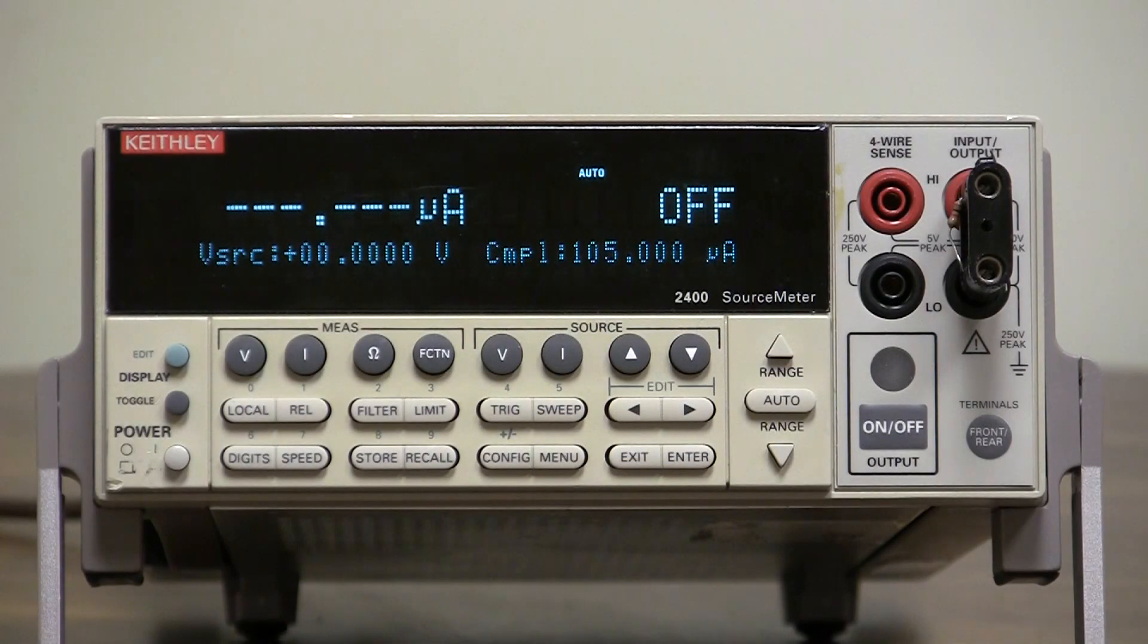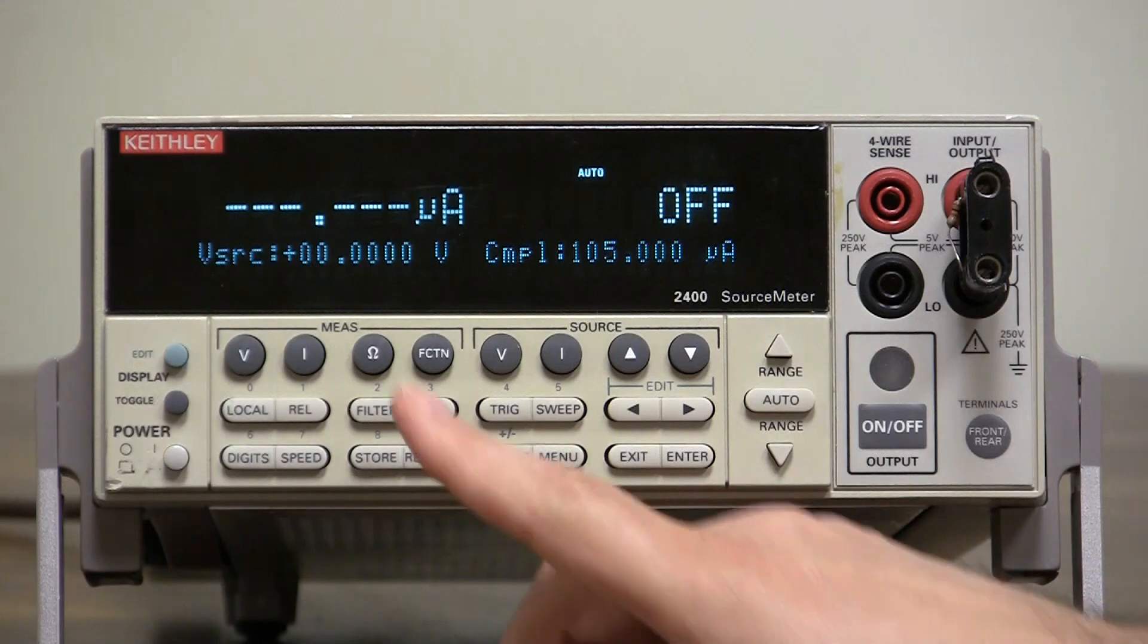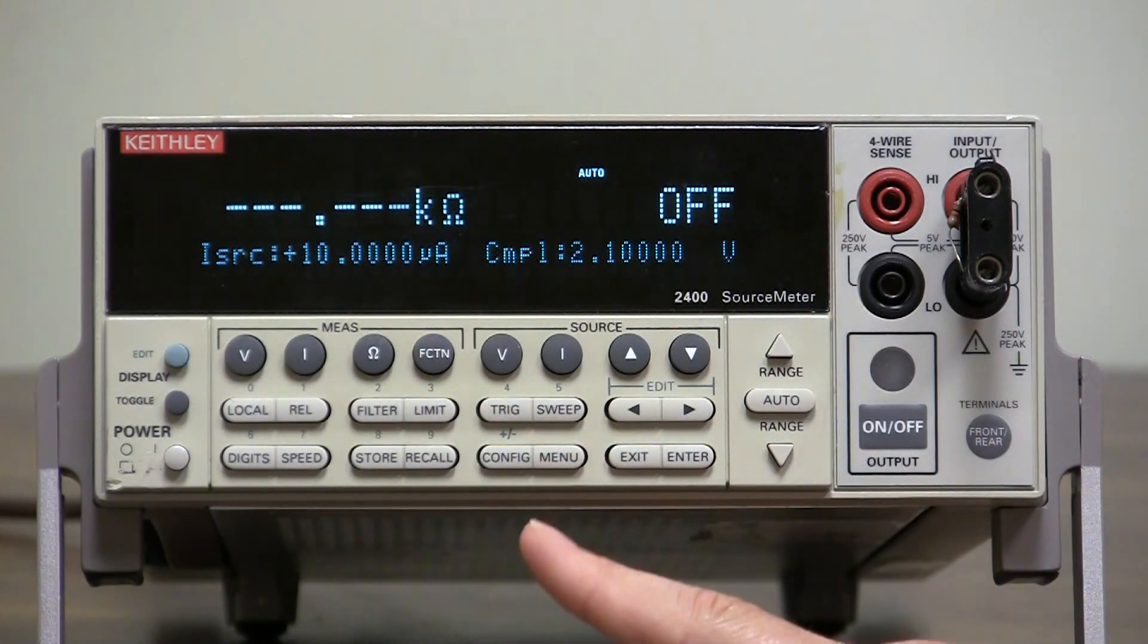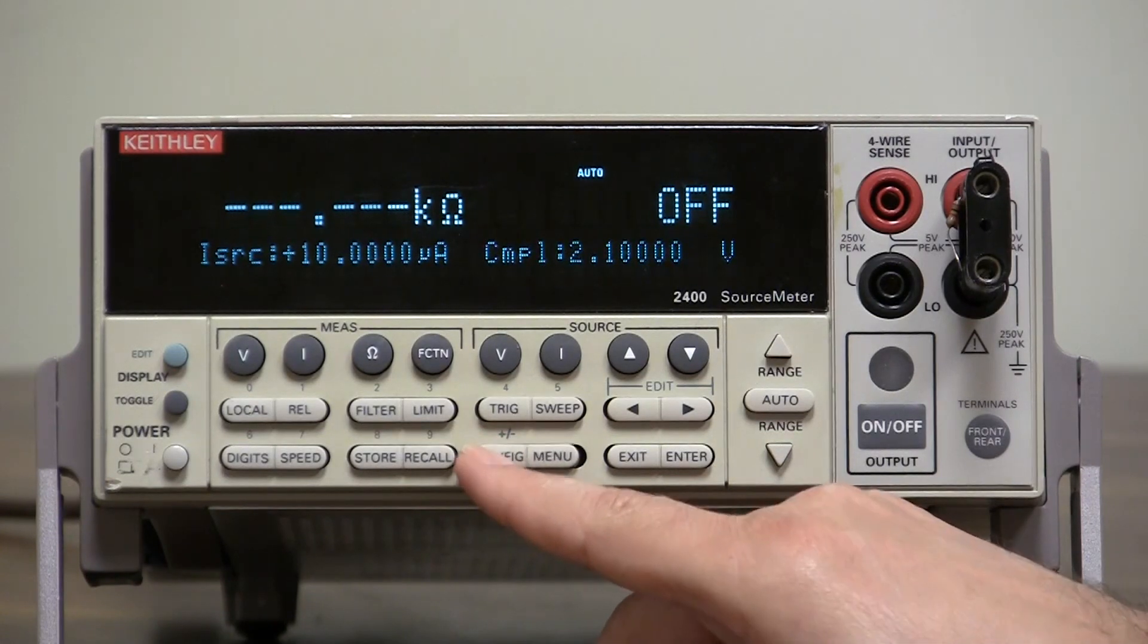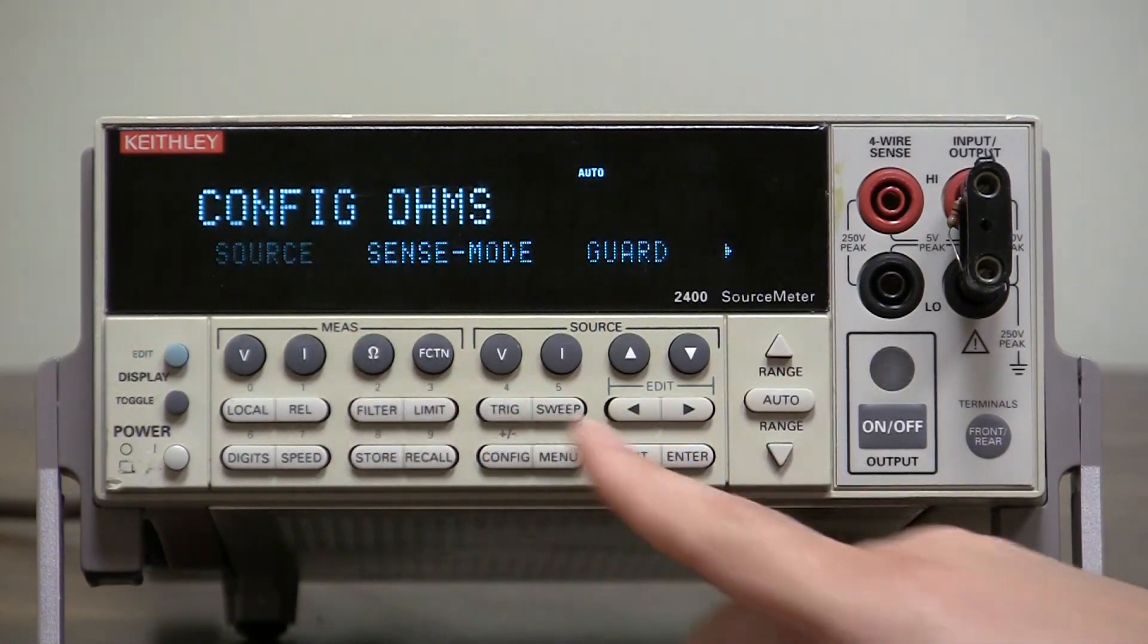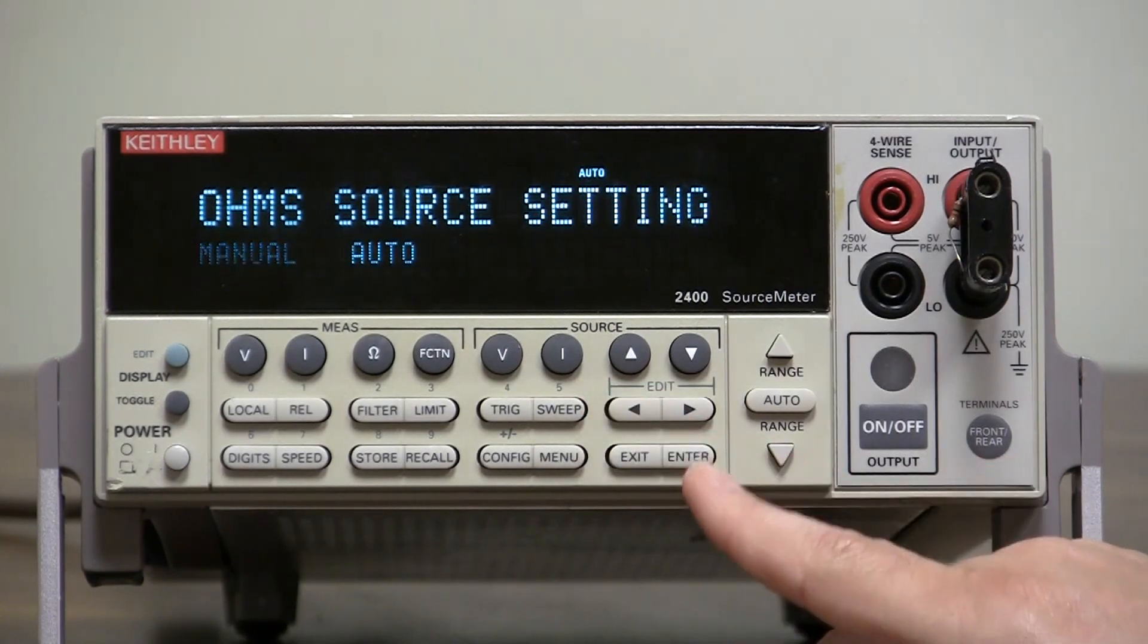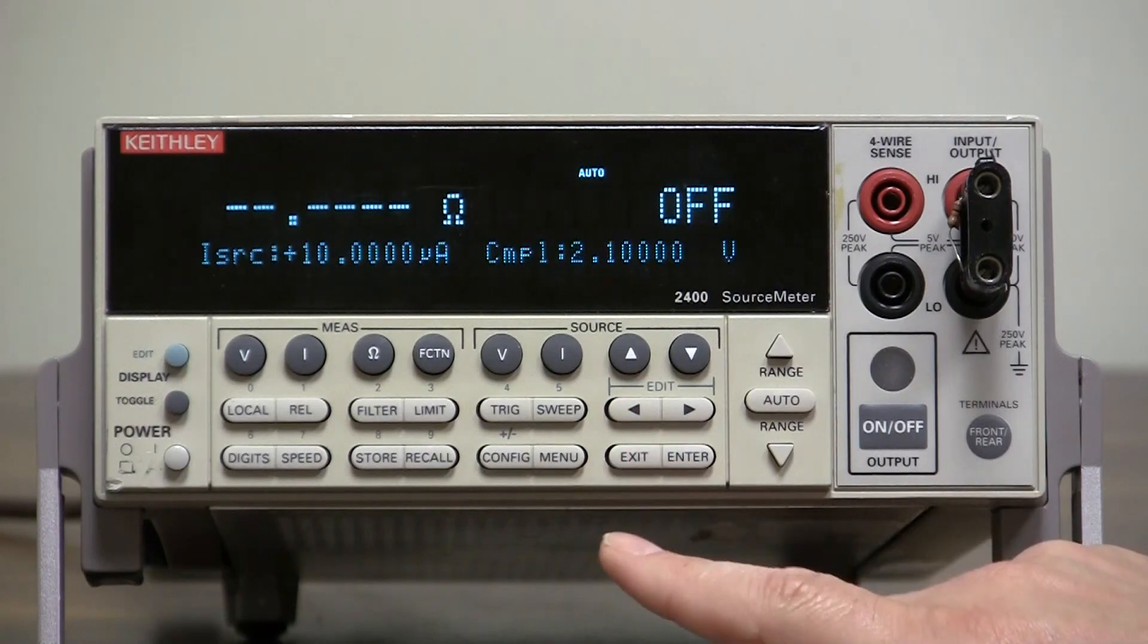To show the difference between real and range compliance, let's use the ohms measurement function since we have a 1K resistor on here. So we'll select ohms by pressing the ohms button, but for this we need to be in manual ohms so we can control the source and the measurement. So let's select configure ohms source, we'll go to manual, press enter, exit.